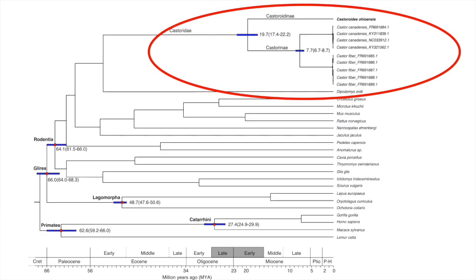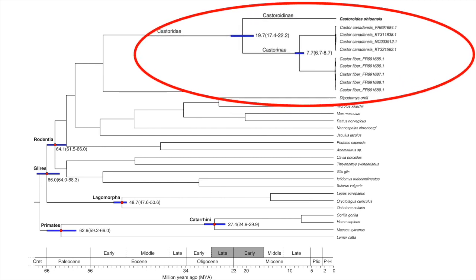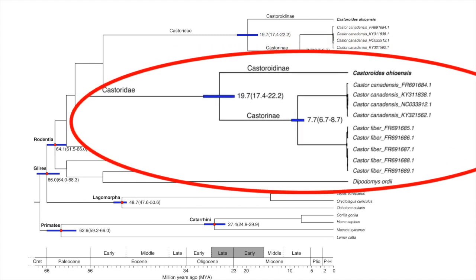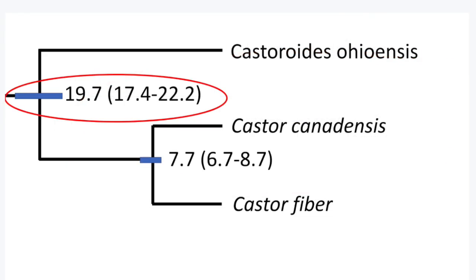We found that modern beavers were the closest relatives of the extinct giant beaver in our study, a relationship dating back 19.7 million years. Since modern and giant beaver species all share traits related to an aquatic lifestyle, we can be confident that beavers have been aquatic for at least 20 million years.